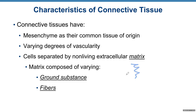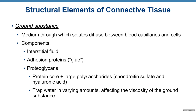Between cells there is extracellular matrix, which is composed of ground substance and fibers. Ground substance is the medium through which solutes diffuse between blood capillaries and cells. Components of ground substance include interstitial fluid, adhesion proteins, proteoglycans — organic molecules made of protein and large polysaccharides such as chondroitin sulfate and hyaluronic acid — and water in various amounts, affecting the viscosity of the ground substance.